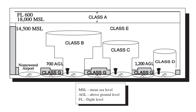In Sweden, airspace is divided into Class C and G only. Class C is used for all controlled airspace, and Class G is used elsewhere.